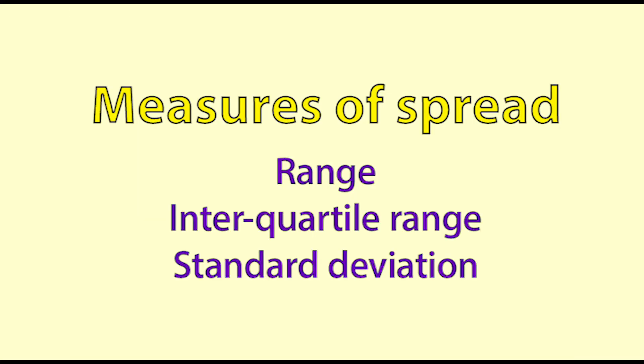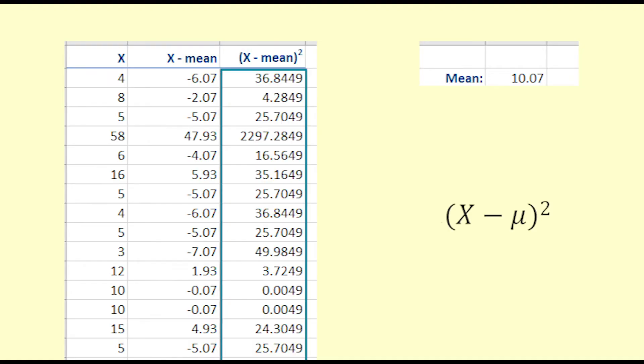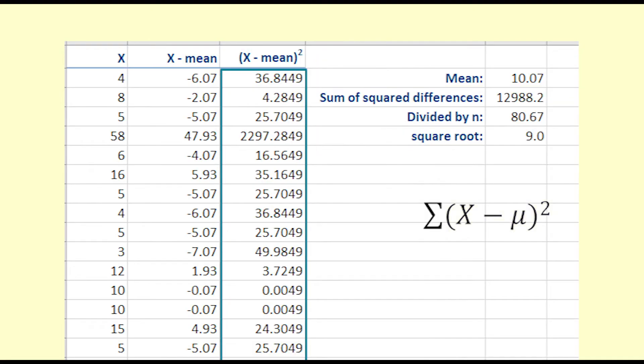Standard deviation. The standard deviation is a very popular way of expressing how spread out the distribution of a set of data is. While explaining how the formula works we will assume that this set of data is a population. For each value we find out how far it is from the mean using subtraction. Then we square each of those differences, add them together and divide by the number of observations. That gives the variance. Then we find the square root of the variance to get the standard deviation.